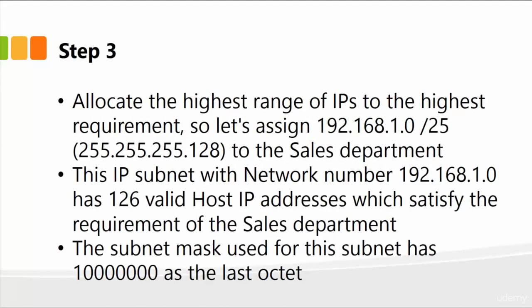Step three is to allocate the highest range of IPs to the highest requirement. Sales has 100 computers, so let's assign 192.168.1.0/25 to the sales department. This IP subnet with network number 192.168.1.0 has 126 valid host IP addresses, which satisfies our requirement since the sales department has only 100 computers. The subnet mask used for this sales department has one and then seven zeros as the last octet based on the bits.